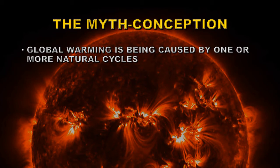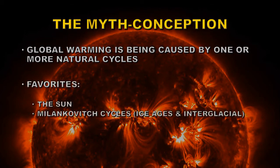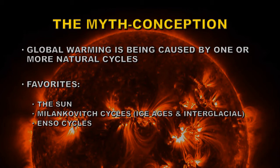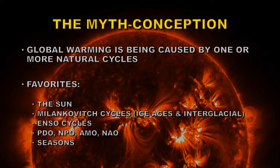They tend to be rather vague about which cycles they are referring to, and there's a good reason for that, as we shall see in a minute. Some of their favorites to blame are the solar cycle, Milankovitch cycles — which is the change in the Earth's orbit that brings about the initiation of ice ages and interglacial periods — ENSO cycles, which is the change between La Niña and El Niño. There are some smaller cycles similar to that, such as the Pacific Decadal Oscillation, the North Pacific Oscillation, the Atlantic Multidecadal Oscillation, and the North Atlantic Oscillation. And of course the cycle that we're most familiar with, which is the seasons.